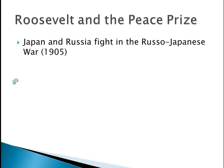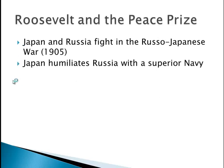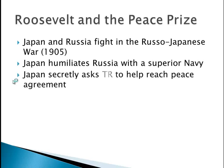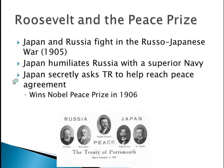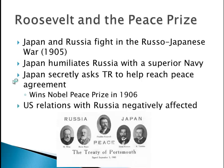In 1905, we have the Russo-Japanese War, and Japan humiliates Russia with a superior navy. Japan was very powerful at this time. Japan secretly asked Teddy Roosevelt to help reach a peace agreement, and he did — winning the Nobel Prize in 1906. However, Russia was really upset because they felt they got the short end of the stick in the treaty.